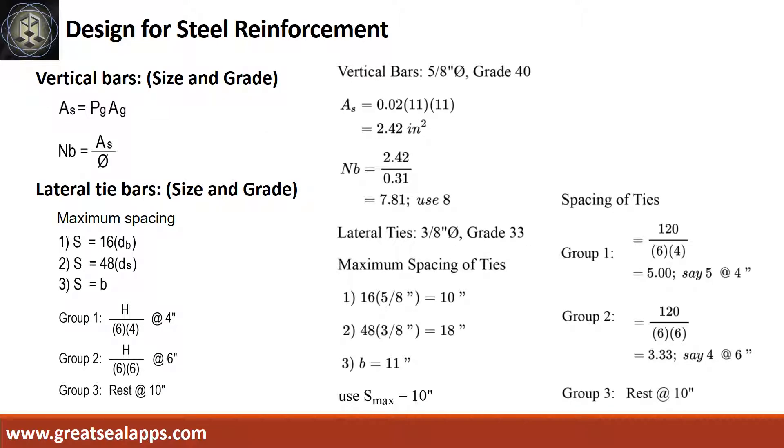Given steel ratio of 2% and 11 inches square, the area of steel is 2.42 square inches. The number of bars for 5/8-inch diameter is 8.